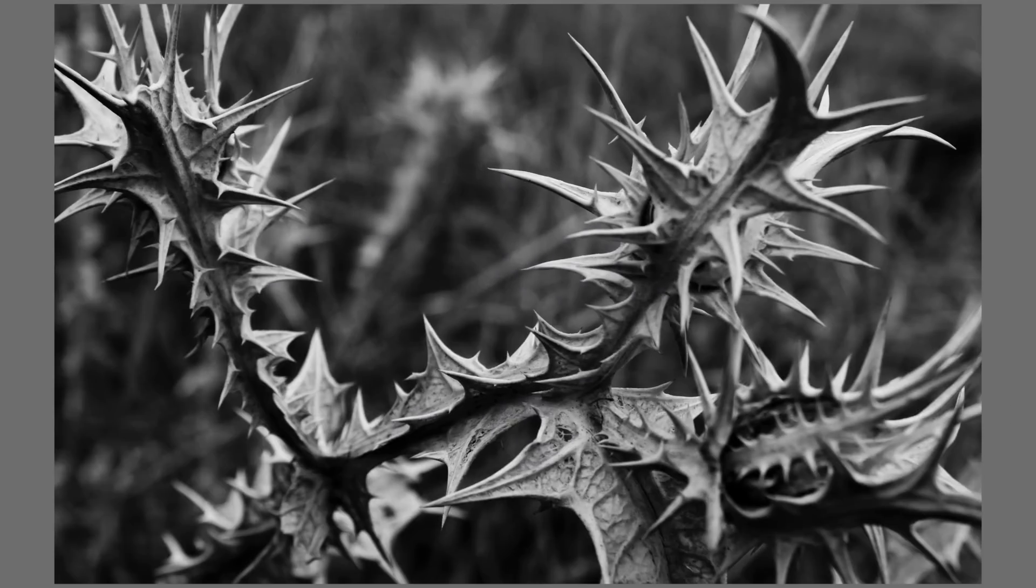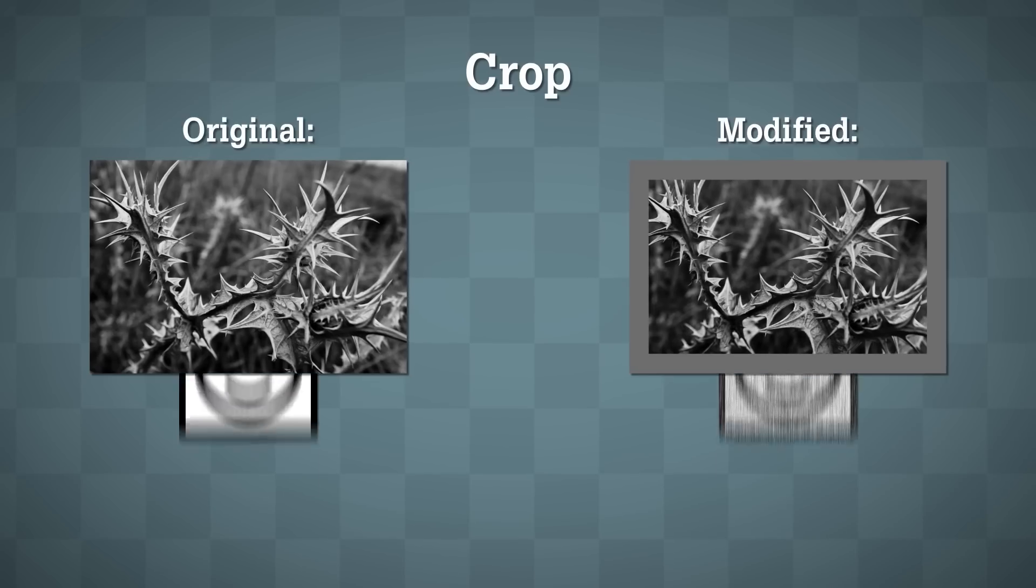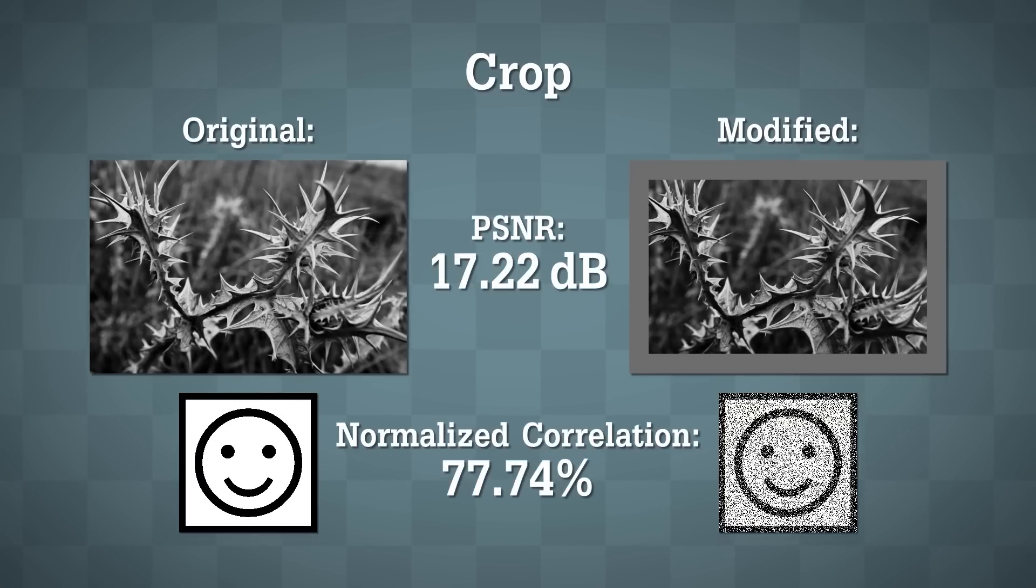Now, the image is geometrically altered. When cropping the image, the cropped region was filled with the mean of the available values so that the cropped area would not skew the watermark's regeneration. Despite real values being completely absent from the modified image, again, the smiley face is still visible.